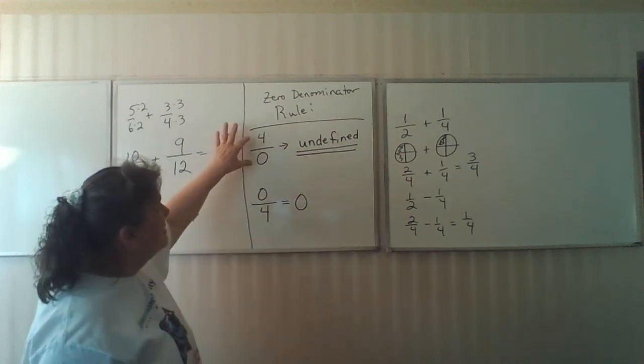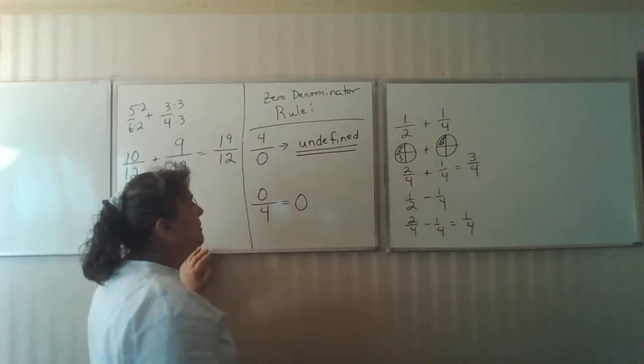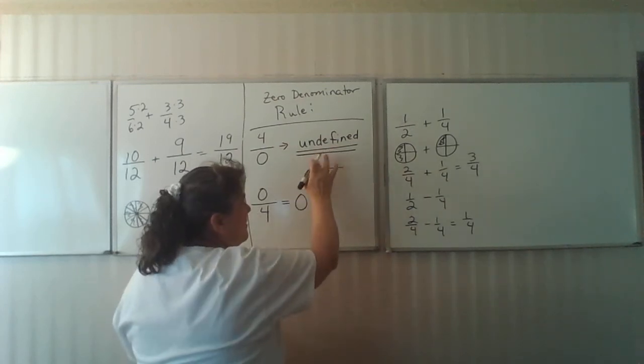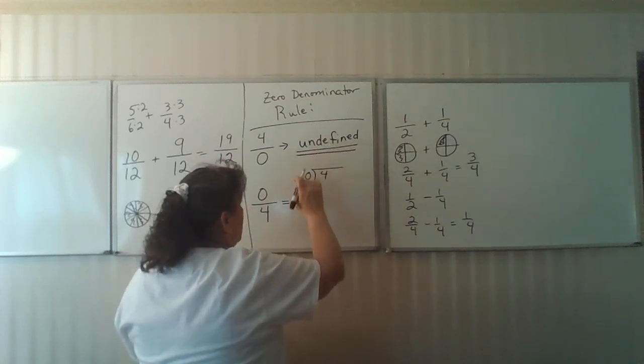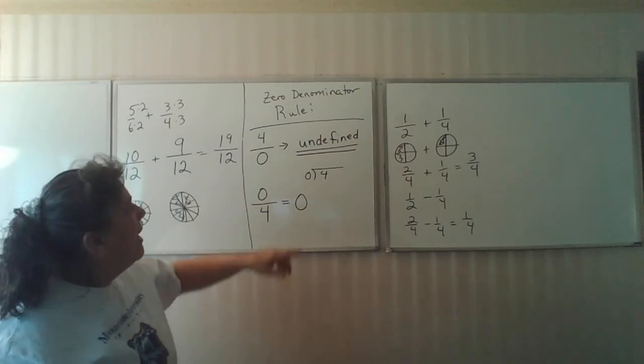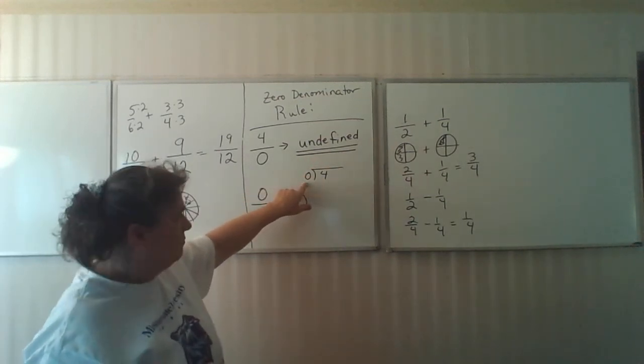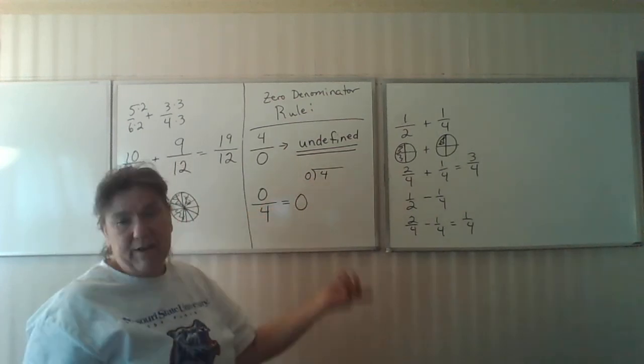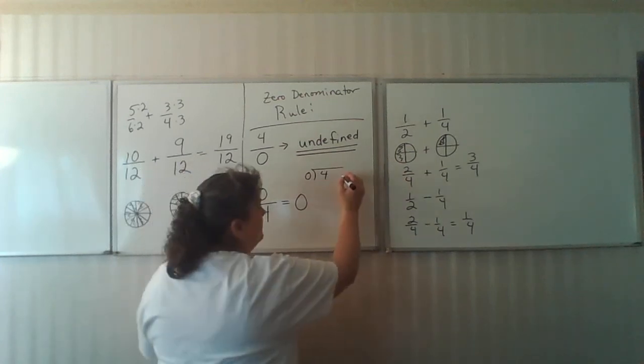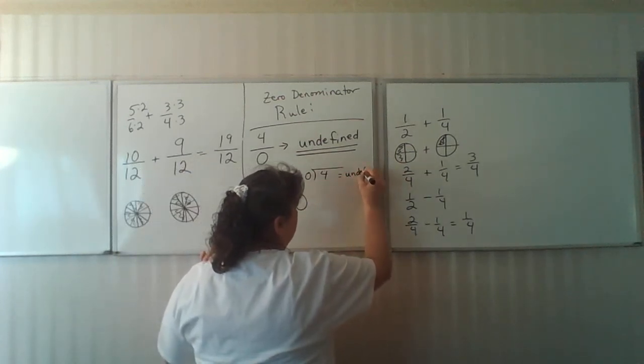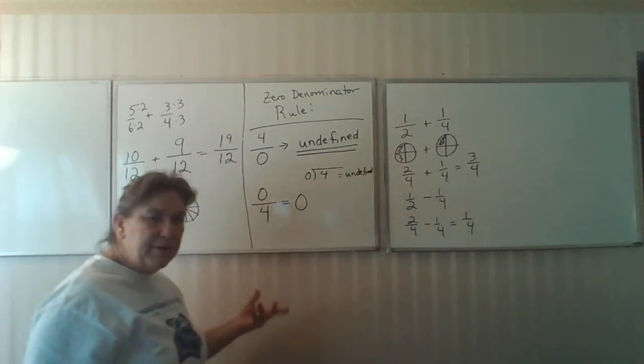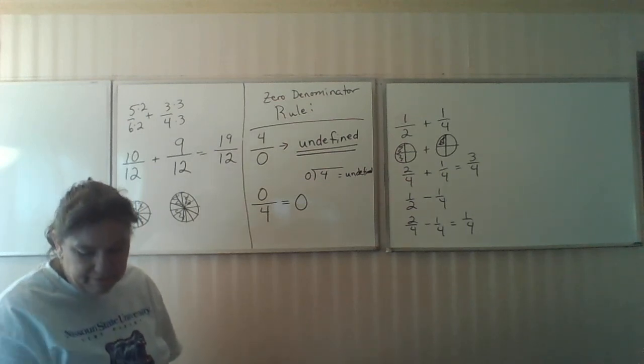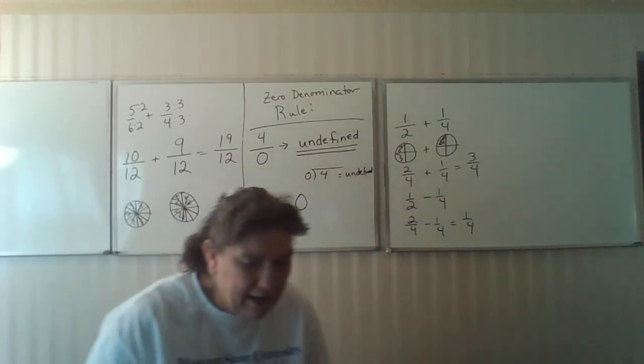Another way, if you looked at this as division, it's also undefined because every number you choose, one times zero is zero, five times zero is zero, ten times zero is zero, a hundred times zero is zero. Every single number times zero is zero. So there's no way to get any kind of a unique answer for four divided by zero. Therefore also undefined. So there's two different ways to look at it. Both ways you end up with the same answer. It is undefined. Okay, that's the first half of this lesson.